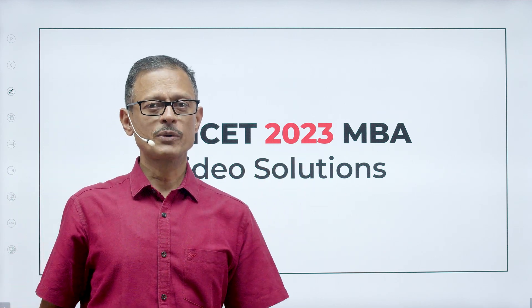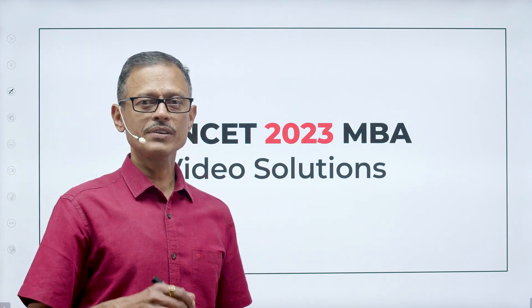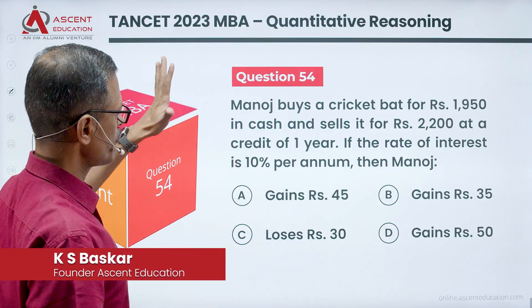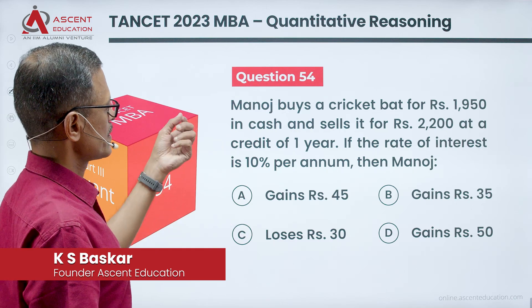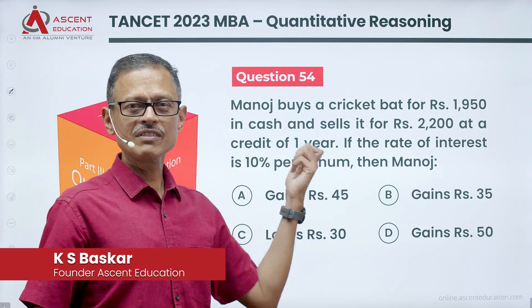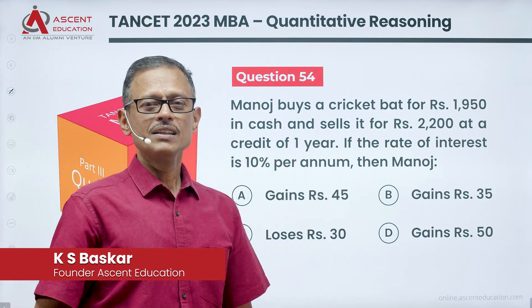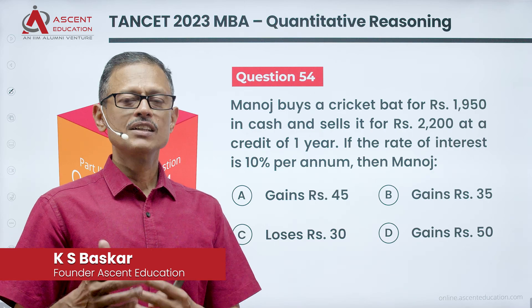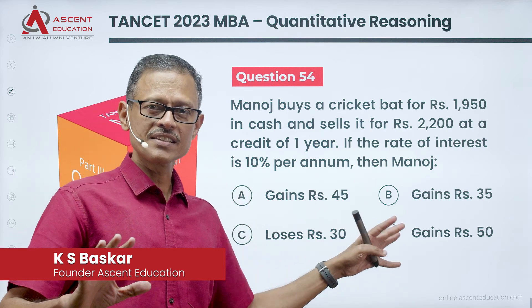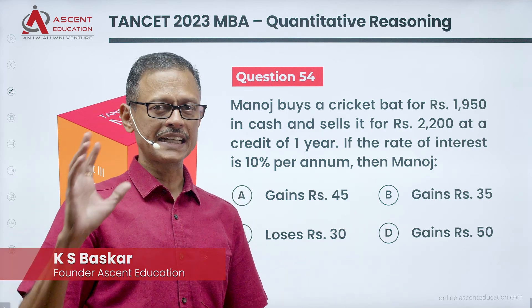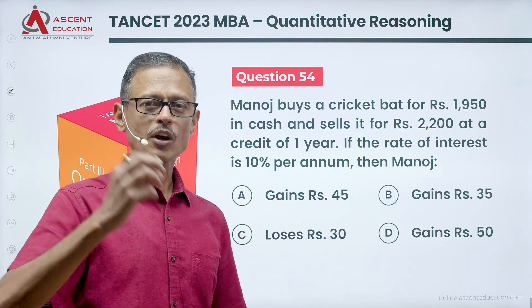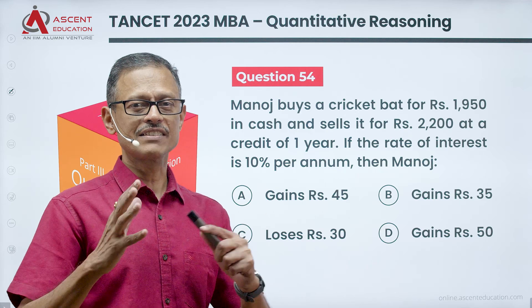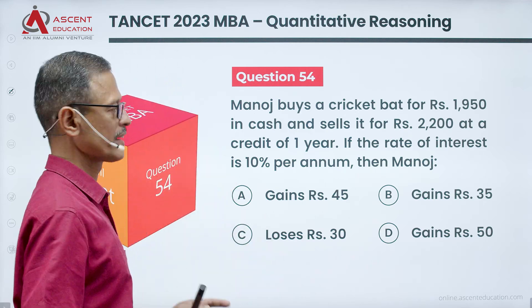This video covers the TANCET 2023 MBI question paper, focusing on the Aptitude section. We are solving question number 54. This question is easy to answer — it is a profit, loss, and interest question. An interesting and easy one.